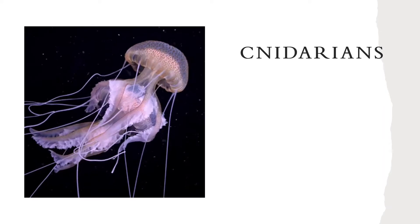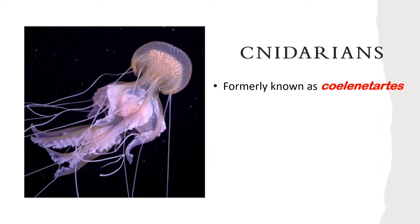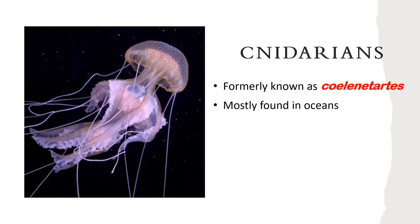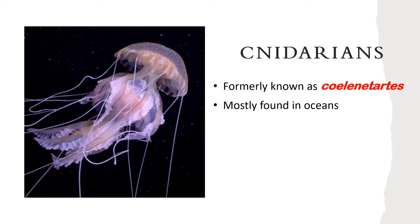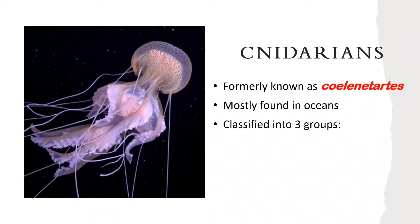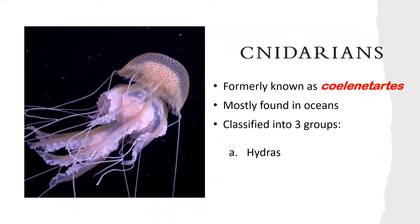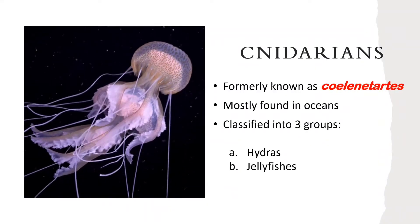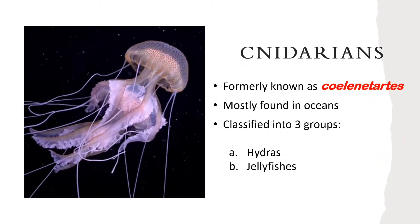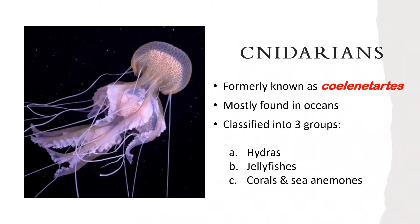Cnidarians are formerly known as coelenterates. There are over 10,000 kinds of these marine animals, mostly found in the oceans. Cnidarians are diverse but can be classified into three groups: hydras, jellyfishes, and corals.